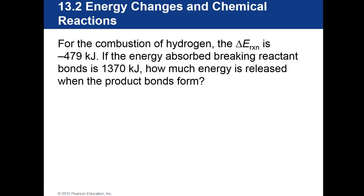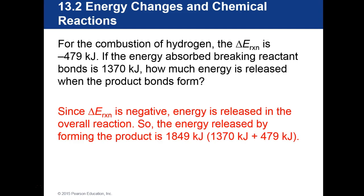For the combustion of hydrogen, the change in the energy of the reaction is negative 479 kilojoules. If the energy absorbed breaking the reactant bonds is 1,370 kilojoules, how much energy is released when the product bond forms? Since the energy of the reaction is negative, energy is released overall. The energy released by forming the product is 1,849 kilojoules, which is 1,370 plus 479.